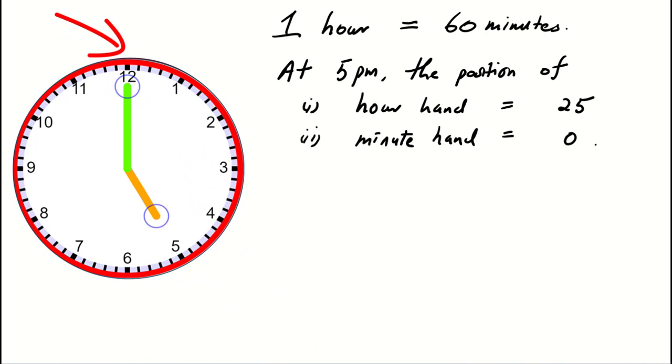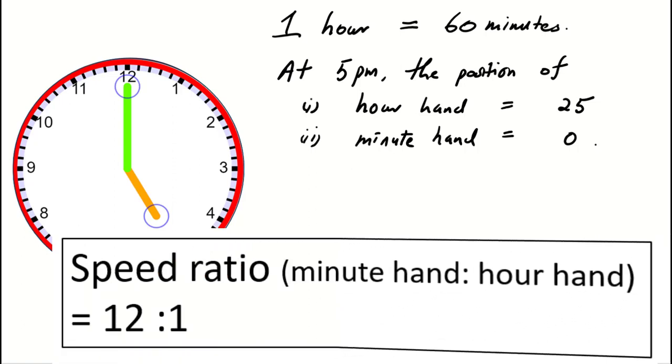We also know that in one hour, the minute hand moves 60 units and the hour hand moves 5 units. This gives us a speed ratio of 12 to 1.